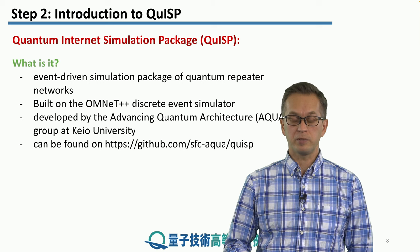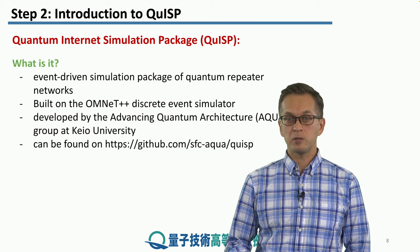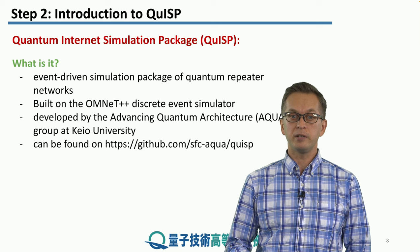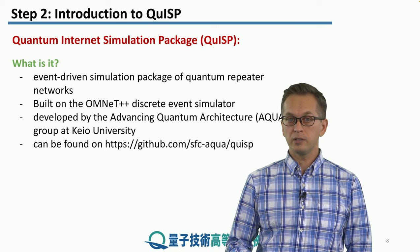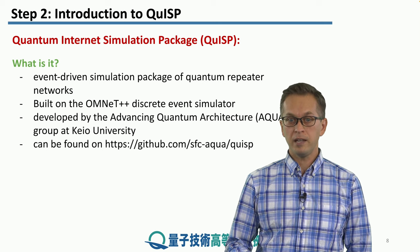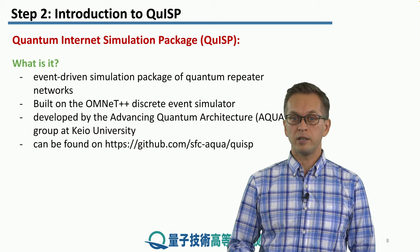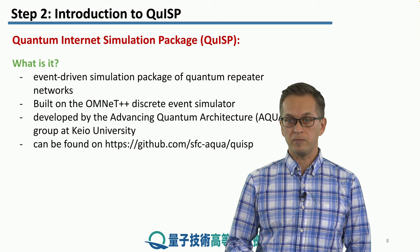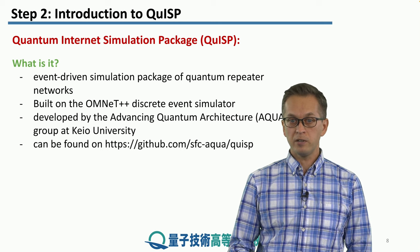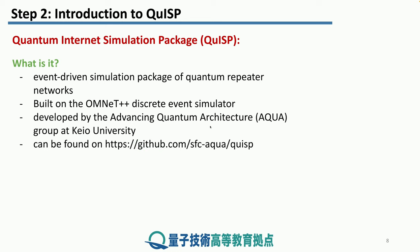So, what is QISP? It is an event-driven simulation package of quantum repeater networks. It is built on the OMNET++ discrete event simulator written in C++. And it is being developed by the Advancing Quantum Architecture group at Keio University. If you're interested in finding out more about QISP or becoming a contributor, just go to this GitHub webpage.